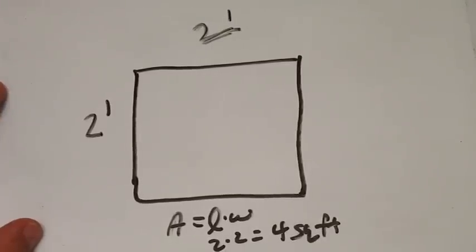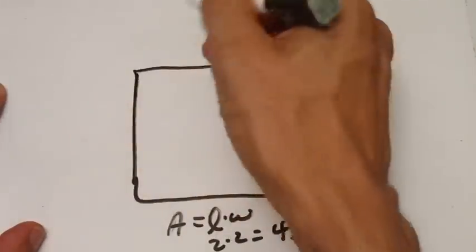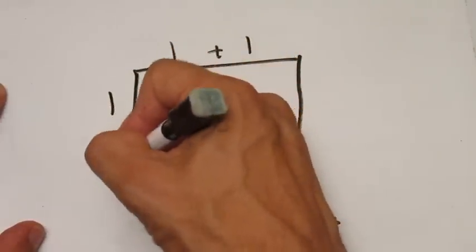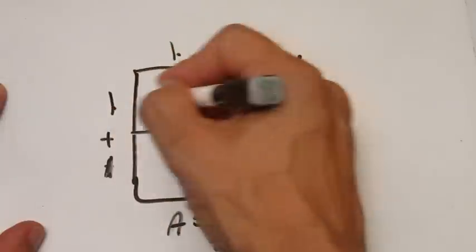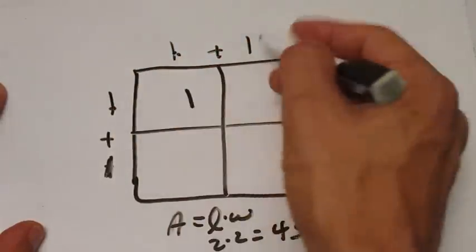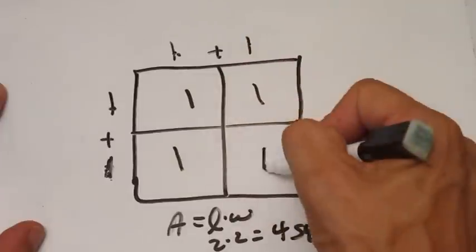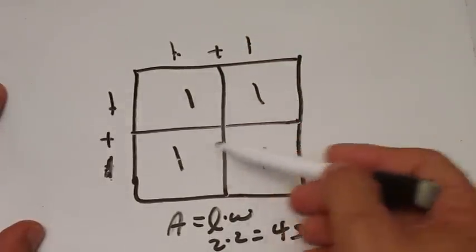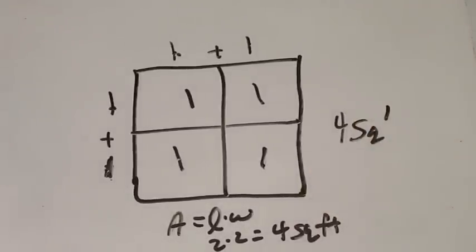That's the idea behind the box. If you take that 2 feet and make it into 1 plus 1, and this side also into 1 plus 1, you've got a 1-by-1 box in each section — 1 times 1 is 1, four times. You add up the inside of the boxes: 1 plus 1 plus 1 plus 1, you get the same answer, 4 square feet. That's the idea behind the box method when you multiply polynomials.